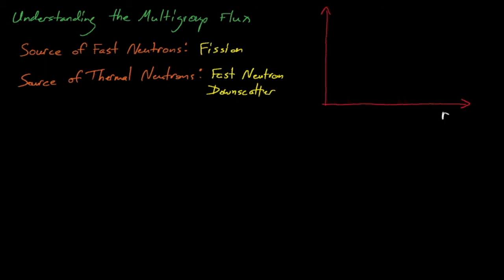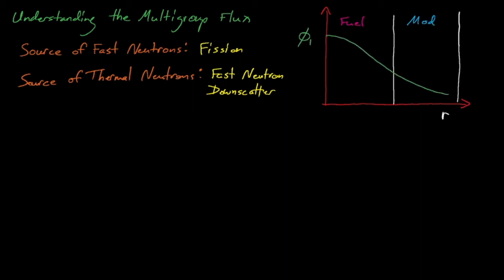The fast flux looks fairly similar to what it looked like before. We have a peak in the center of the fuel, which decreases as we move towards the edge of the fuel as neutrons leak out of the system. The thermal flux is different. No thermal neutrons are born in the fuel because the chi-spectrum for thermal neutrons equals zero, and also because the fuel is generally a very high-mass material, such as uranium. Because the fuel is a high-mass material, the probability for a fast neutron to downscatter to thermal energies is very, very low. Neutrons tend to lose a very small amount of energy when they scatter off of heavy materials.